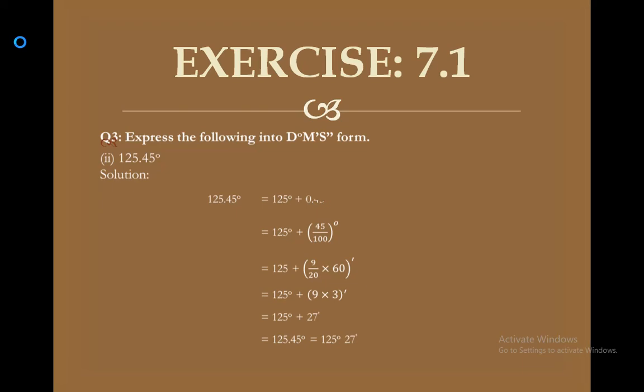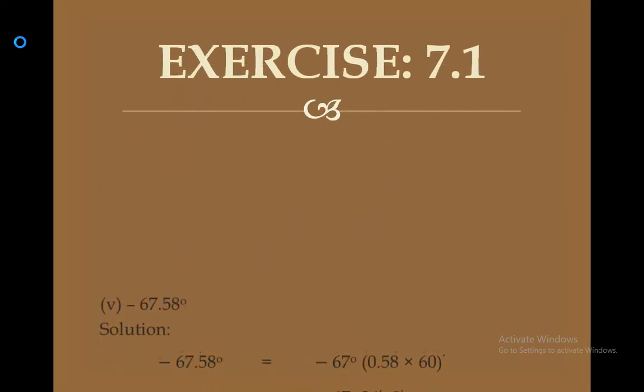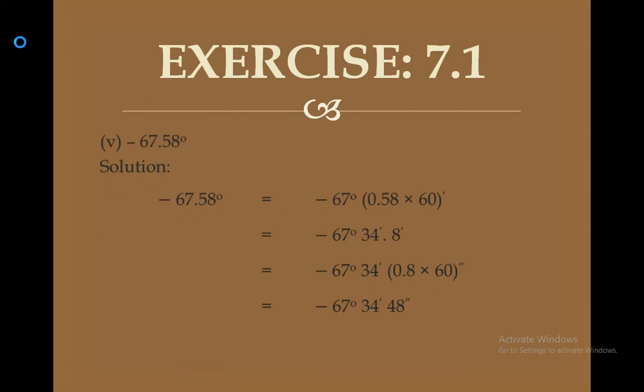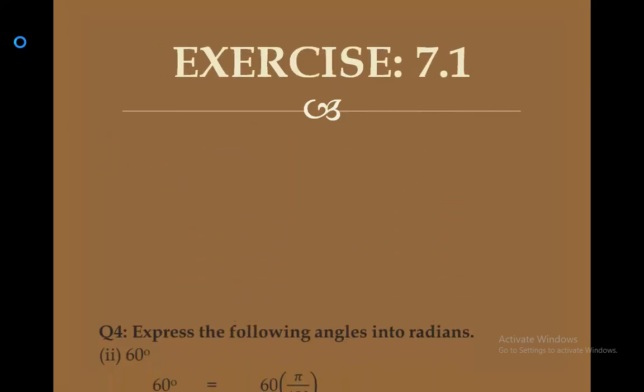Part 5 is minus 67.58 degrees. The whole number 67 with the minus sign remains the same. Multiply 0.58 by 60 to convert to minutes, giving minus 67 degrees 34.8 minutes. Since 34 is whole it stays as minutes; multiply 0.8 by 60 to convert to seconds. The final answer is minus 67 degrees 34 minutes 48 seconds.